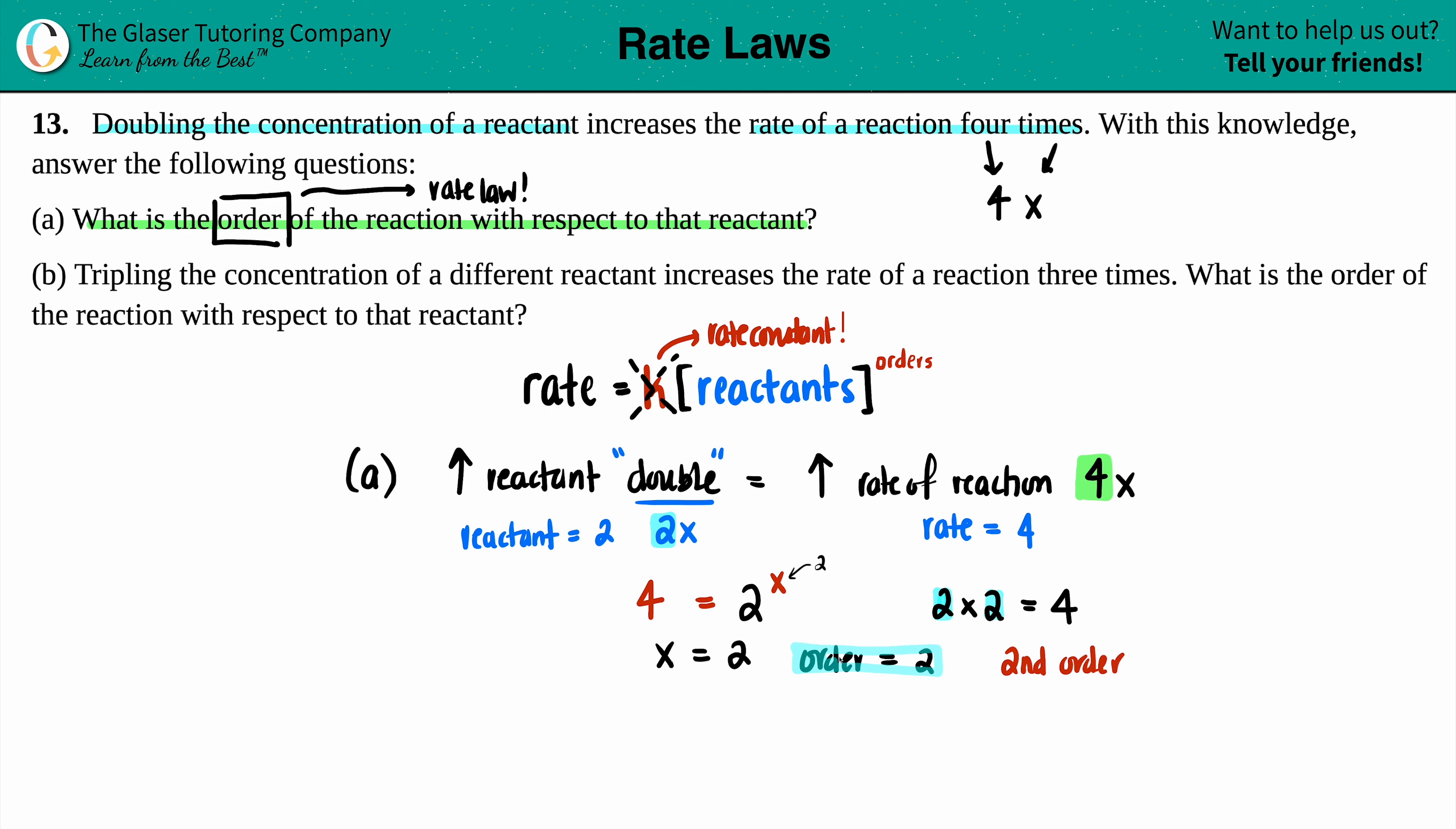Okay. So letter A is done. How easy is that? Now we're going to use the same exact idea to see what B is going on. So now let's see. B says tripling the concentration of a different reactant increases the rate of reaction three times. What is the order of that reaction with respect to that reactant? Well, let's see. They did say that as we are tripling, tripling means that we're going up. So I'm increasing my reactant. And in this case, the word is tripling. So just like doubling, we should have a number that always is being used when we see the word triple or tripling. Do we know what that number is? Yeah, you got it. Tripling is three times.